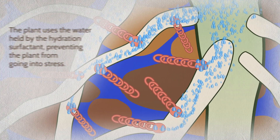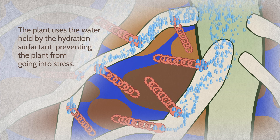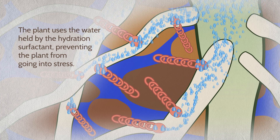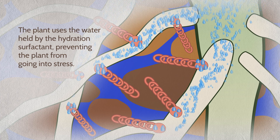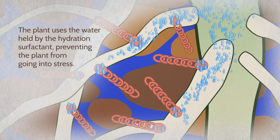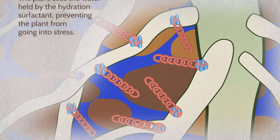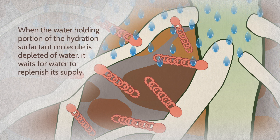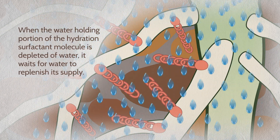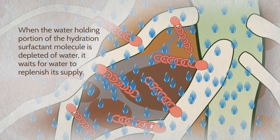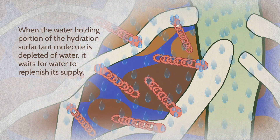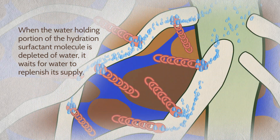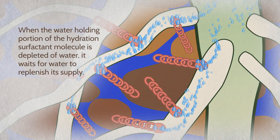The plant easily uses the water held by the hydration surfactant, preventing the plant from going into stress. When the water-holding portion of the hydration surfactant molecule is depleted of water, it waits for rain or irrigation water to replenish its supply.